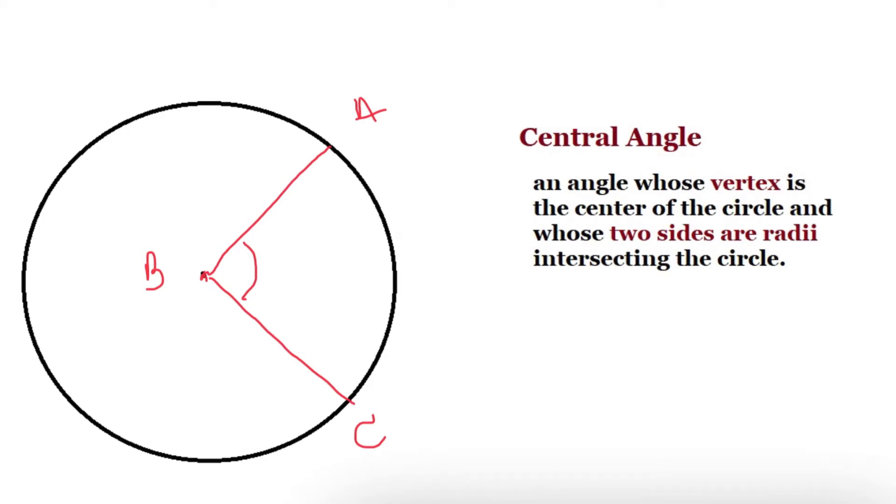And it's important to know that this corresponding arc is going to be the same degree as the angle. So for example, if this angle is 40 degrees, this arc is 40 degrees. So when you have a central angle, the corresponding arc AC in this case is also going to be 40 degrees.